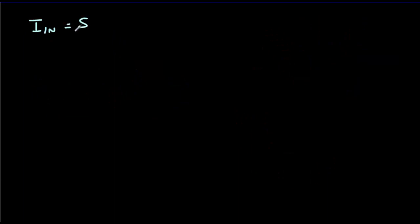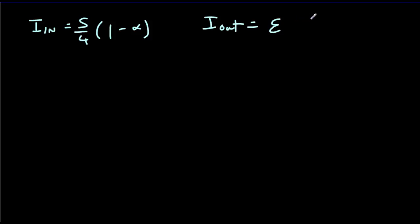So we now have this expression for the input intensity, which includes only the radiation that's absorbed and not the radiation that's reflected. For the output intensity, the Earth is effectively a black body radiator — it's an object at some temperature radiating energy, so we can use the Stefan-Boltzmann equation. The output intensity is going to be equal to the emissivity of the Earth, which tends to be about 0.95, times the Stefan-Boltzmann constant, times the average surface temperature of the Earth in Kelvin raised to the fourth power.